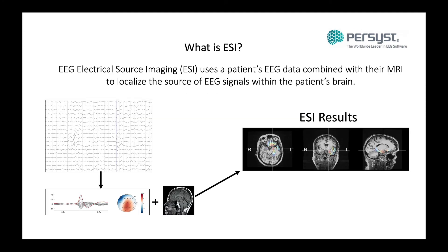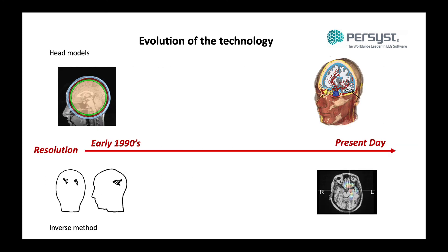So first of all, what is ESI? EEG electrical source imaging is a neuroimaging modality that uses a patient's EEG data co-registered with their MRI to localize the source of the scalp EEG signals within the patient's brain.